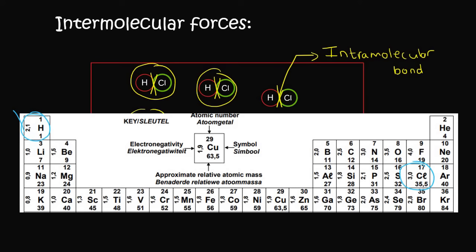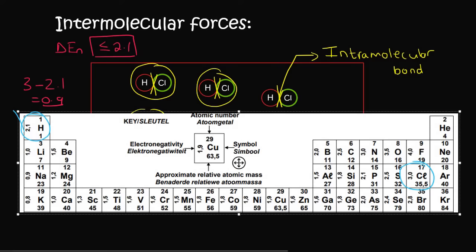Furthermore, if you look at the electronegativity difference, you've got 3 minus 2.1, which is 0.9. And we said that anything that is smaller than or equal to 2.1, if that difference is smaller than that, then it's going to be covalent. And so for 99% of covalent molecules, you don't break the actual bonds that are in between the atoms. You break the individual forces between the different molecules.